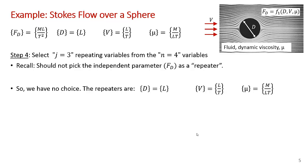We've completed step three. We've shown that we only have one pi parameter. We have j = 3, which is the number of basic dimensions. We select j = 3 repeating variables from the n = 4 variables. One of the rules is that for the repeating variables, we cannot select the independent parameter, so we don't select the drag force. Then we really only have three variables left. We have no choice in this case. The three repeaters have to be diameter, velocity, and dynamic viscosity.